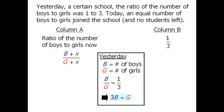Our first step now will be to multiply both columns by G plus X, and now let's multiply both columns by 3. At this point, I want to use the fact that G is equal to 3B. We'll take the G in column B and replace it with 3B.